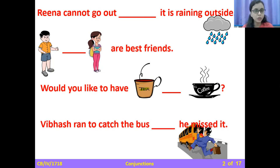The next one. Would you like to have tea or coffee? This is like an option given, a choice. So what word we will use? We use or. Would you like to have tea or coffee? So or is used for giving choices.